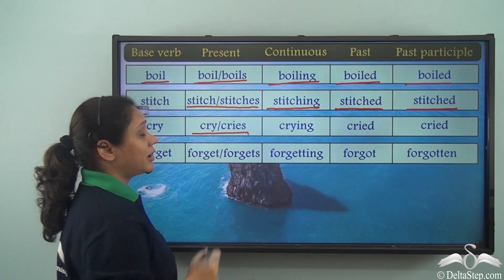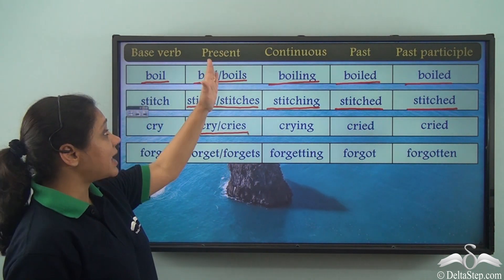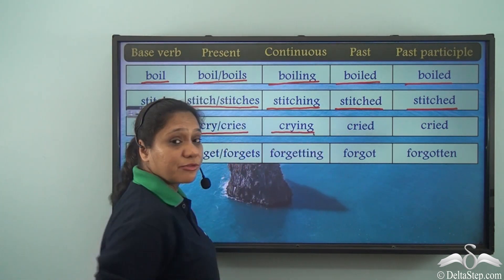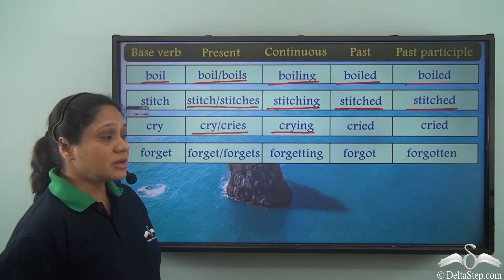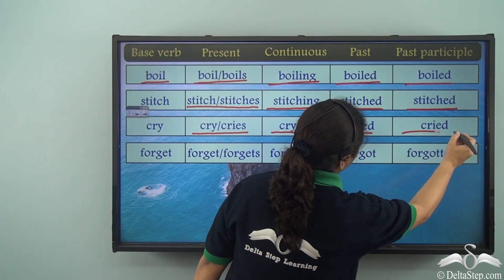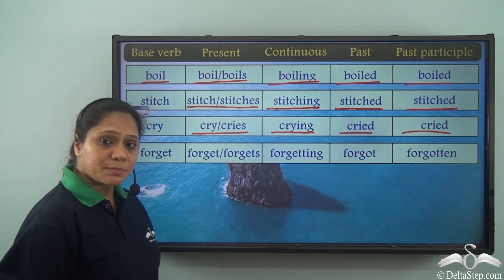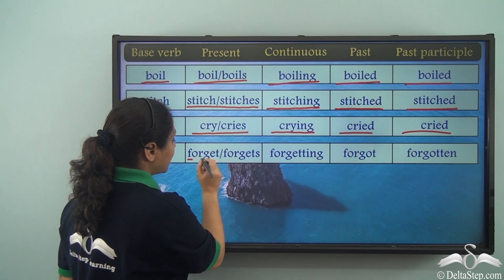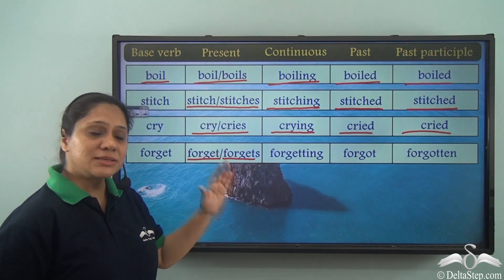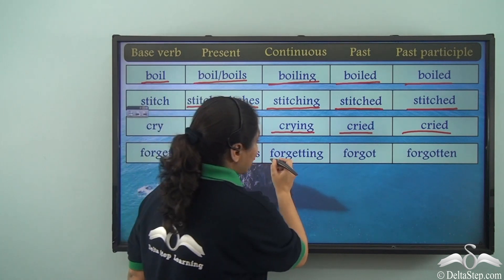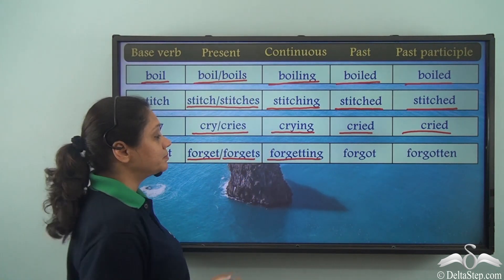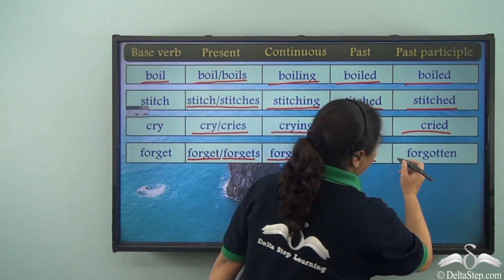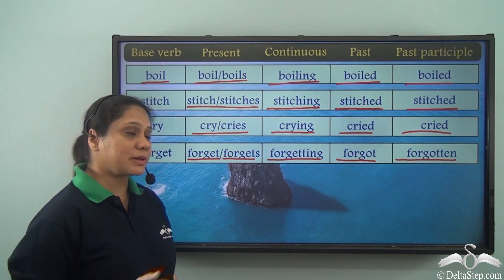For the base verb 'cry', the present tense form is 'cry' or 'cries', and the continuous tense form is 'crying'. For 'forget', the present tense form is 'forget' or 'forgets', the continuous tense form is 'forgetting', the past tense form is 'forgot', and the past participle form is 'forgotten'.